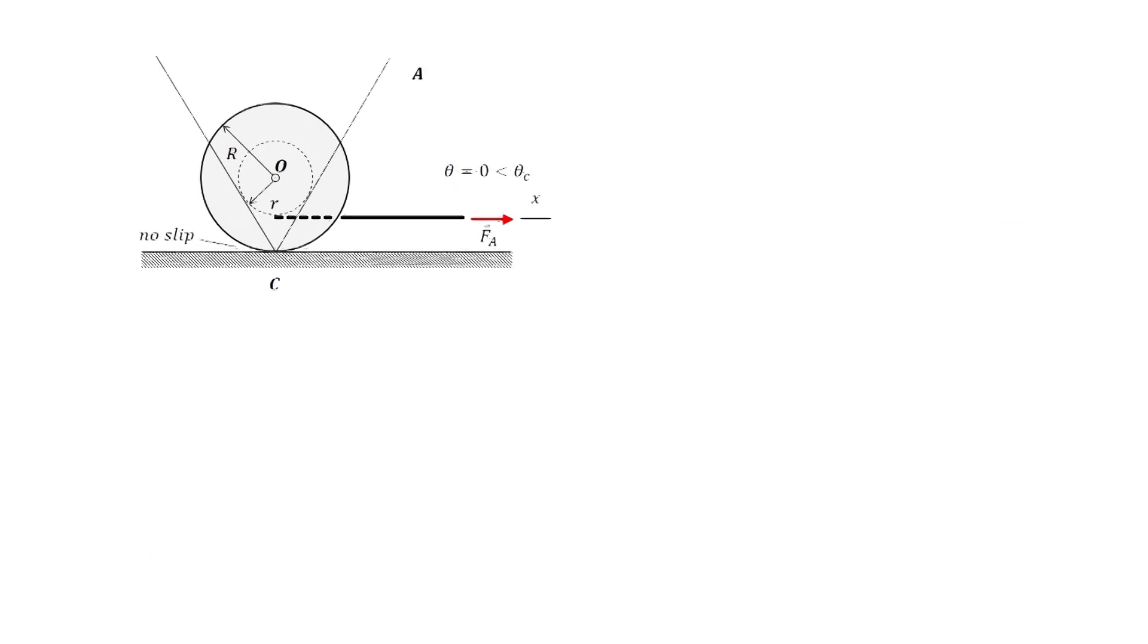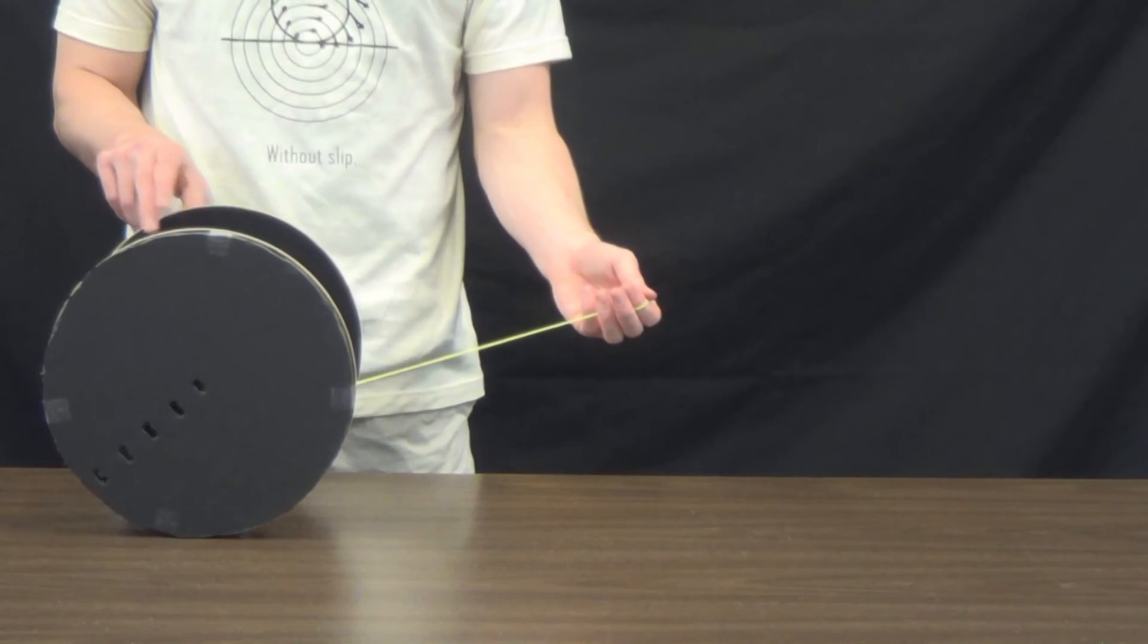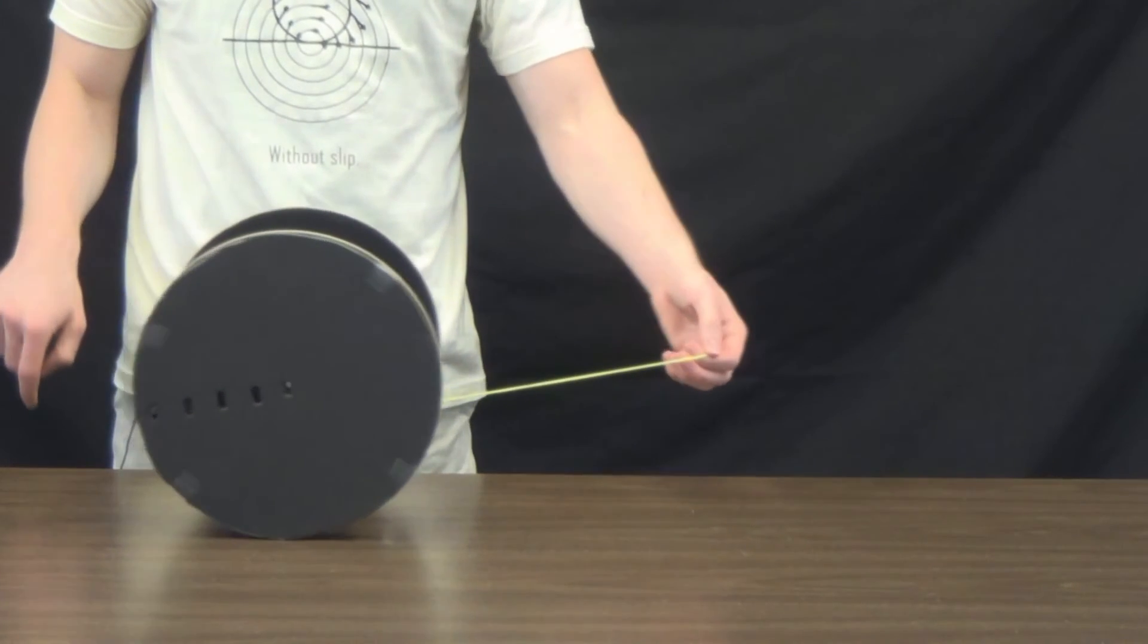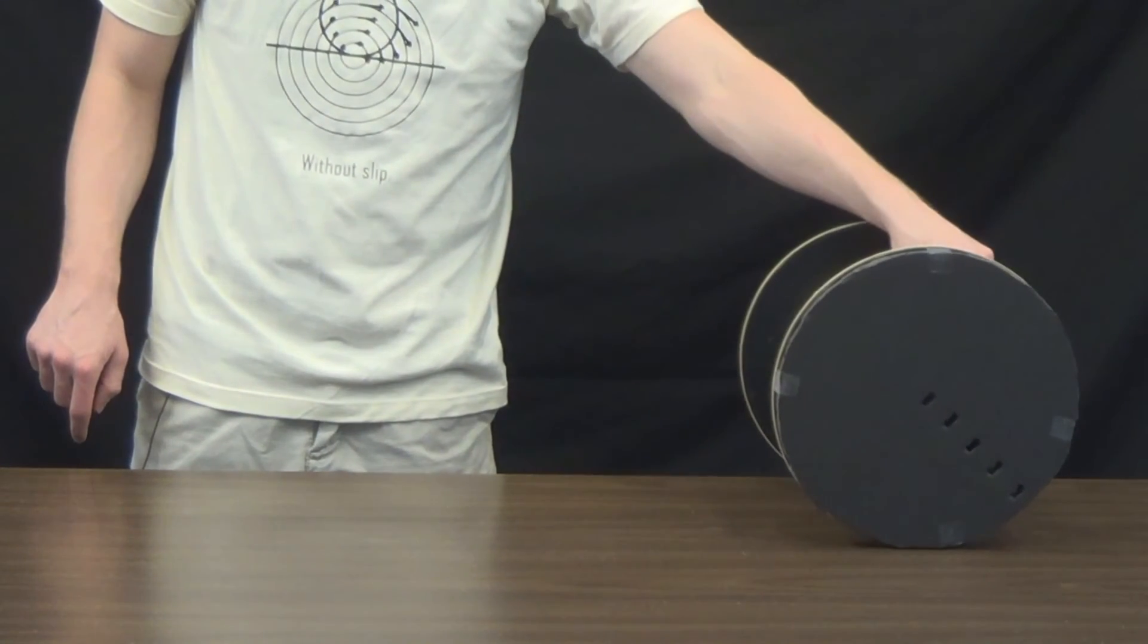The first test will be well below the critical angle. As you can see, as I pull to the right on the string, the spool will roll clockwise and move to the right, raveling itself up.